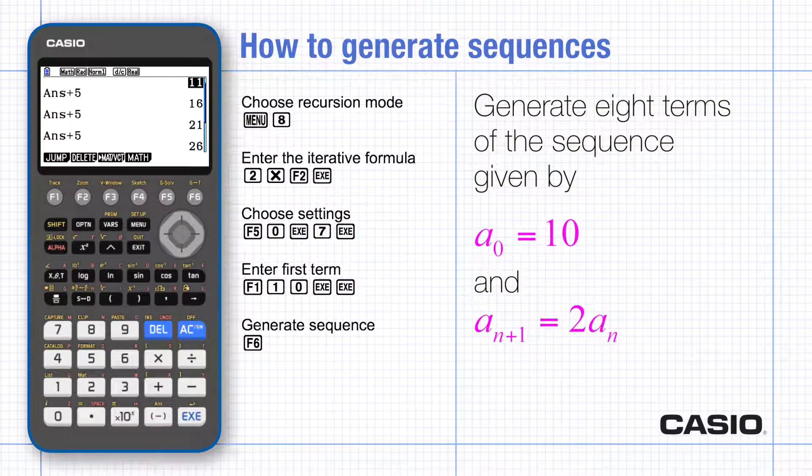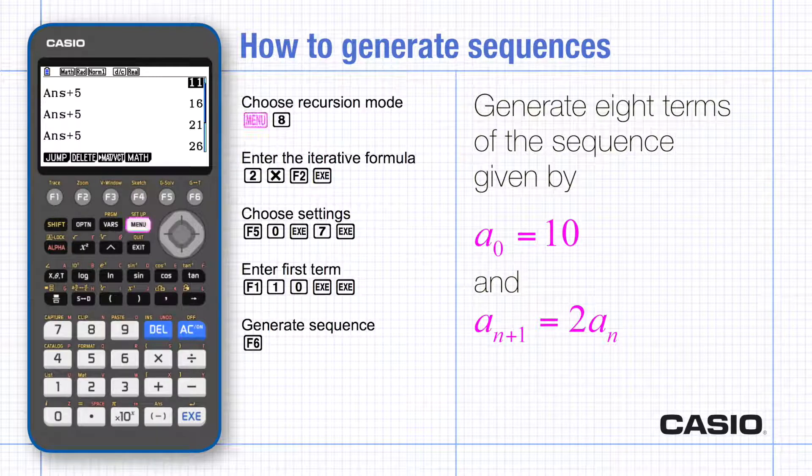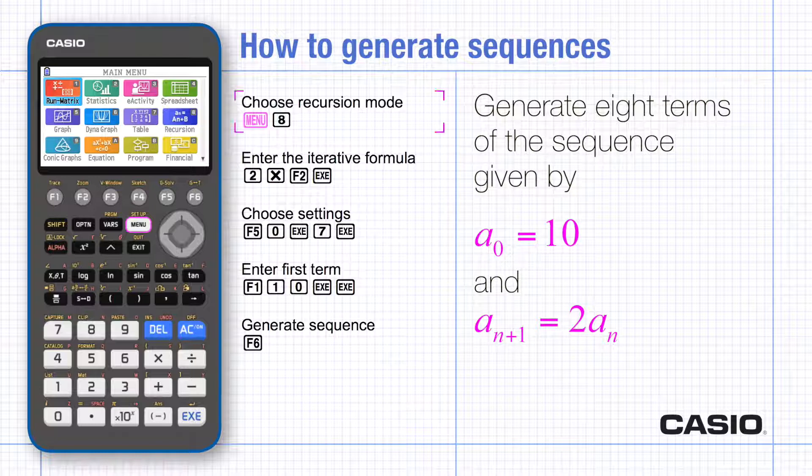In the next example, a term-to-term rule is given algebraically, so from the main menu recursion mode is used to generate the sequence.